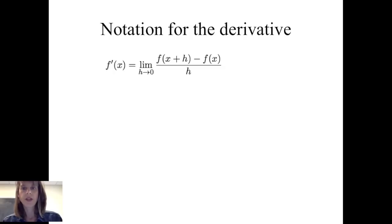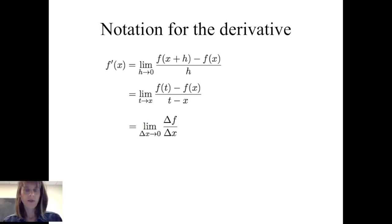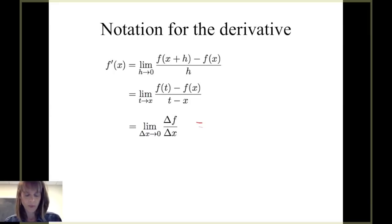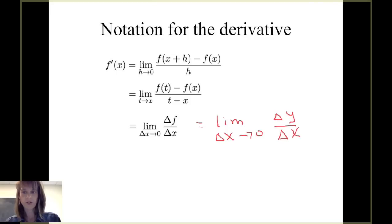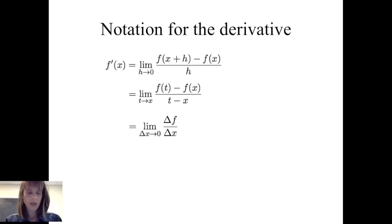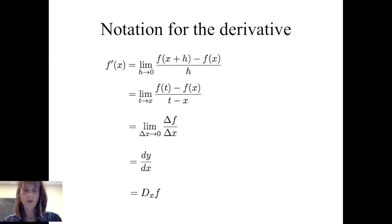We can have different notation for the derivative. Beyond the two limit definitions, we can also write it as the limit of delta f over delta x as delta x goes to 0, which highlights the idea of slope — delta y over delta x, or change in y over change in x. This leads to the notation dy/dx, or a capital D followed by f with a subscript of x, to represent the derivative of f with respect to x. All of these are notations you'll see throughout this course.